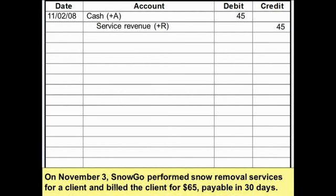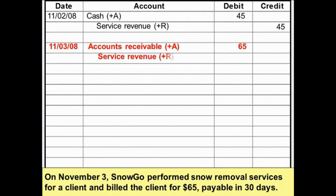Then on November 3rd, SnowGo performed some snow removal services for a client and billed the client for $65 payable in 30 days. SnowGo has done what they're in business to do, so they have a revenue. They don't have cash, but they do have a right to collect cash from the client — an accounts receivable — and accounts receivable are assets. So here, we're going to record an increase in the asset accounts receivable and credit the service revenue account.